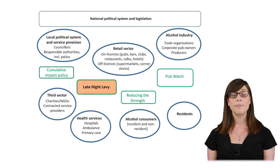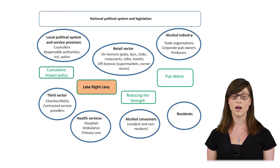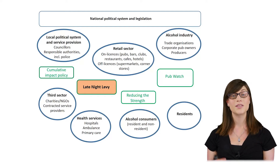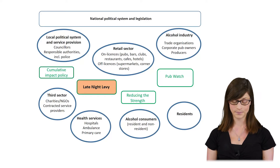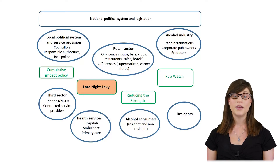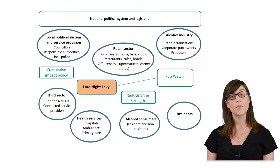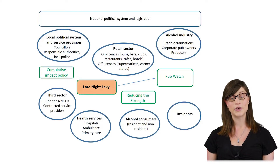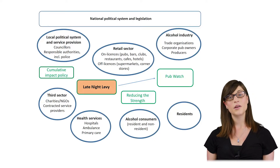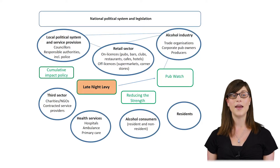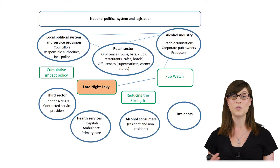A traditional evaluation might look at how the levy reduces police call-outs, alcohol-related hospital admissions, or ambulance call-outs. But with a systems perspective we can do something quite different. The first thing we might do is understand how the levy interacts with all the other interventions operating at the same time within the same system. The late night levy is a regulatory intervention, but it doesn't operate in isolation — there are discounts on the fee for retailers who participate in other schemes, such as PubWatch, which brings together licensing officers, police officers and retailers but is funded by the alcohol industry. We can start to theorize that there are different potential goals and priorities between these very different groups, and a systems evaluation might look at how those competing priorities come into tension within the broader context.